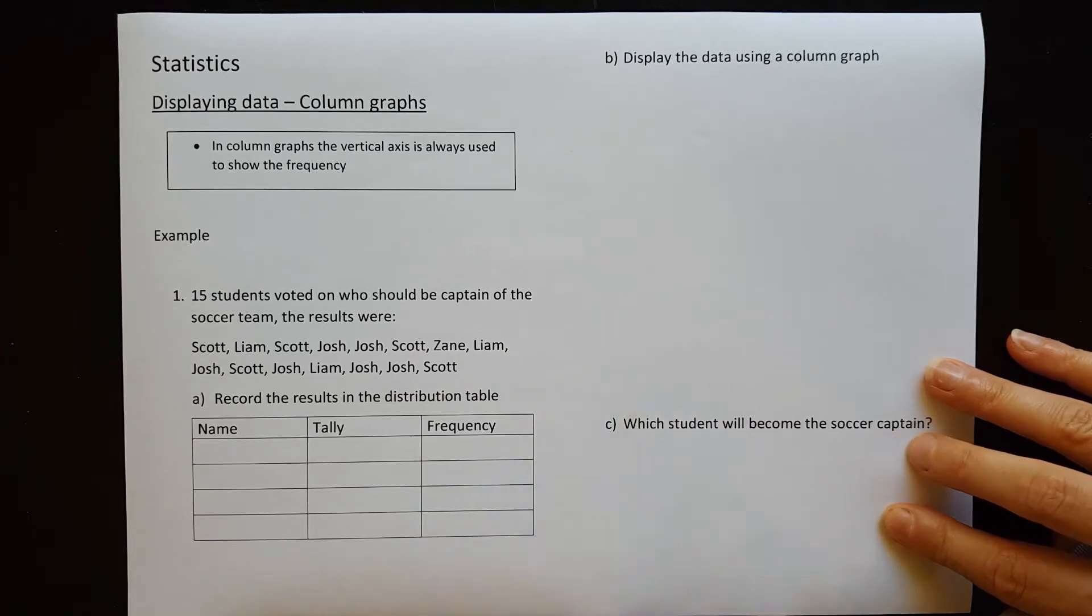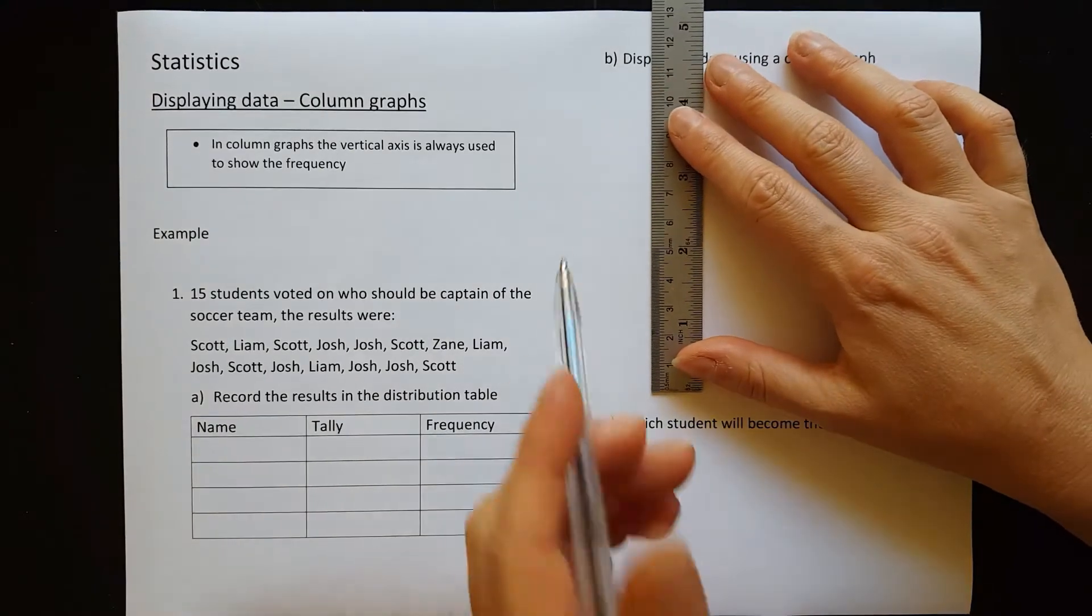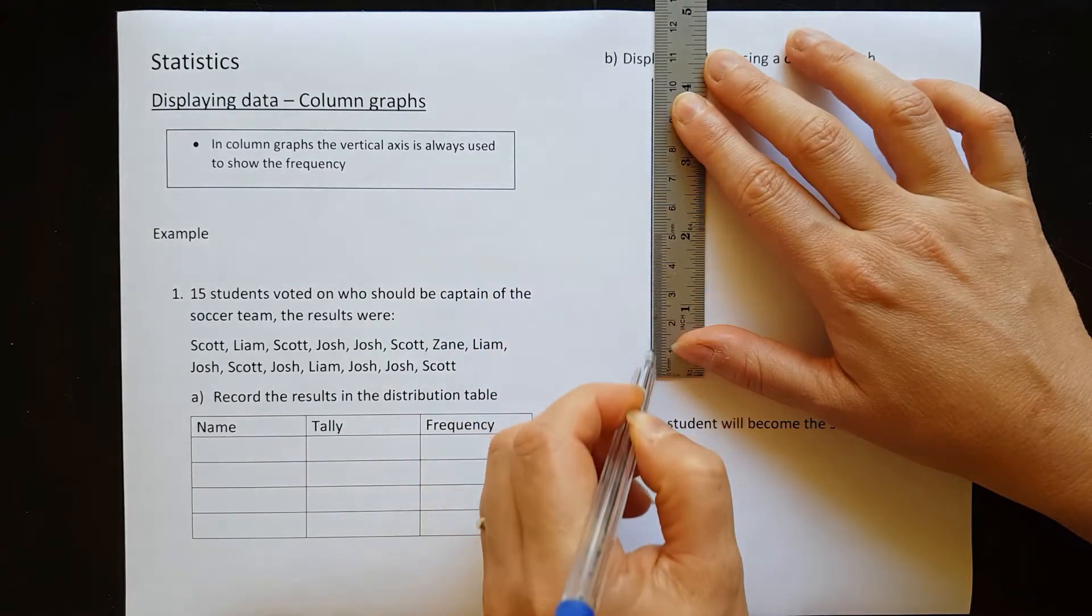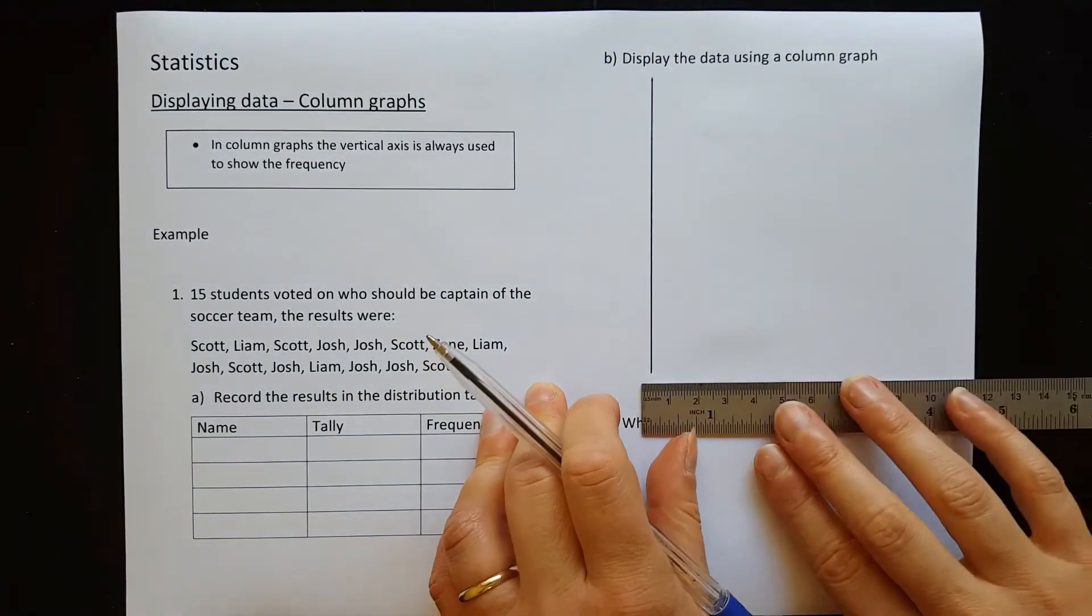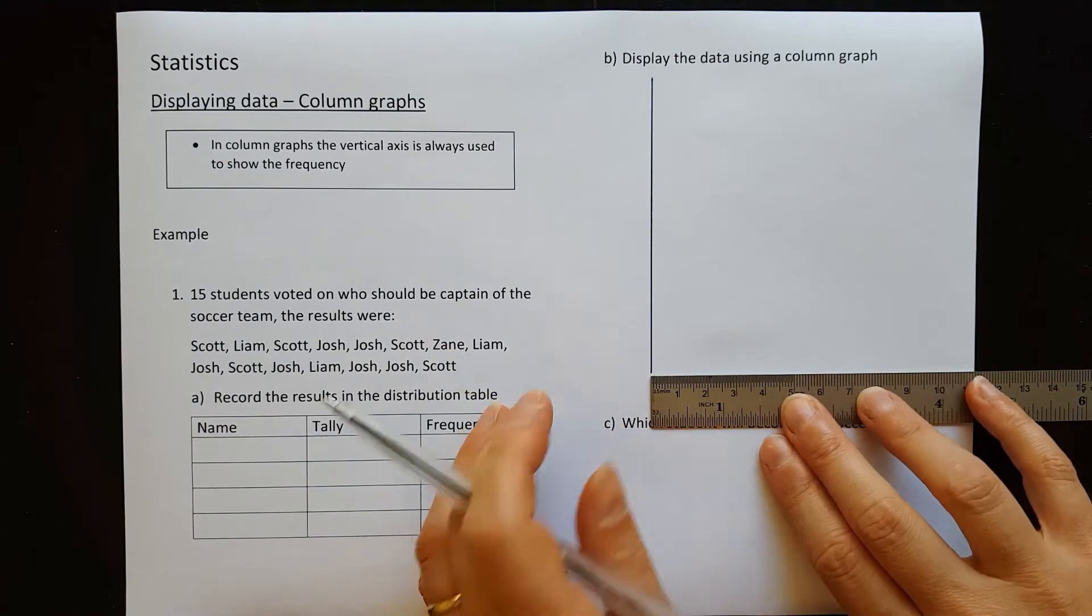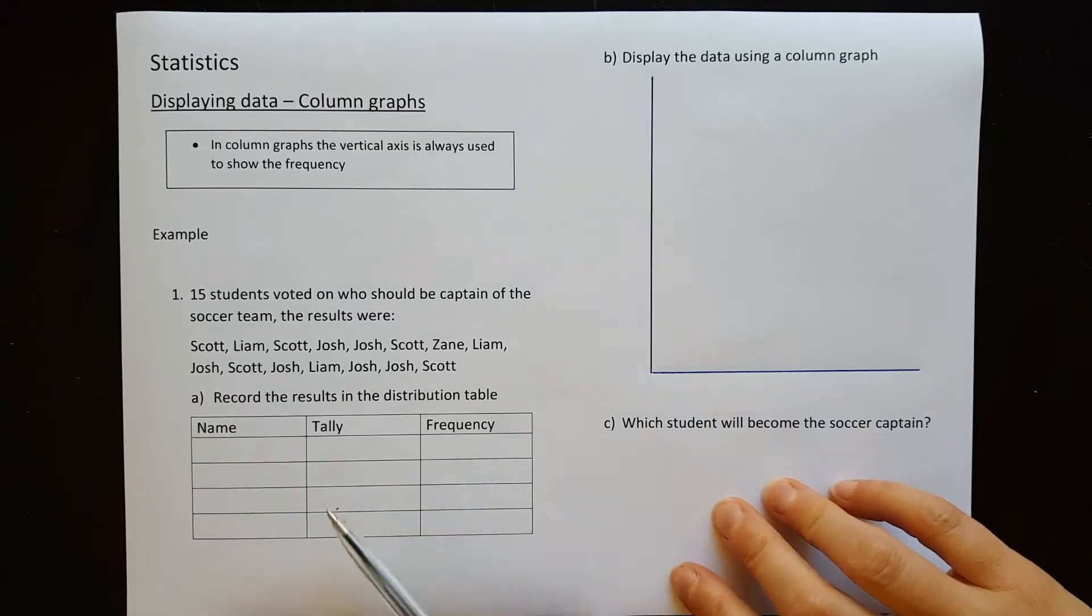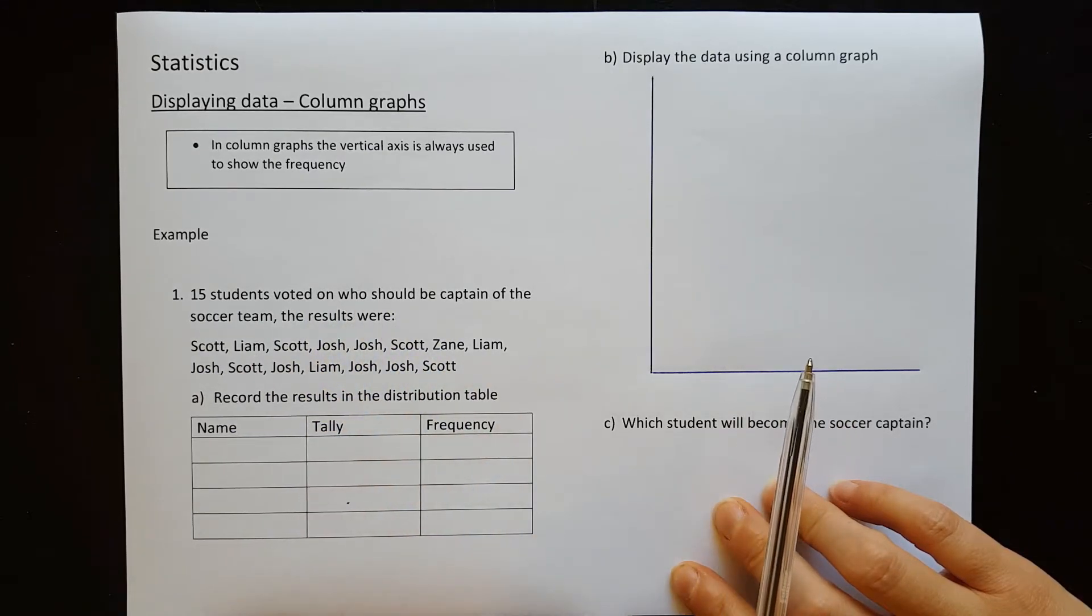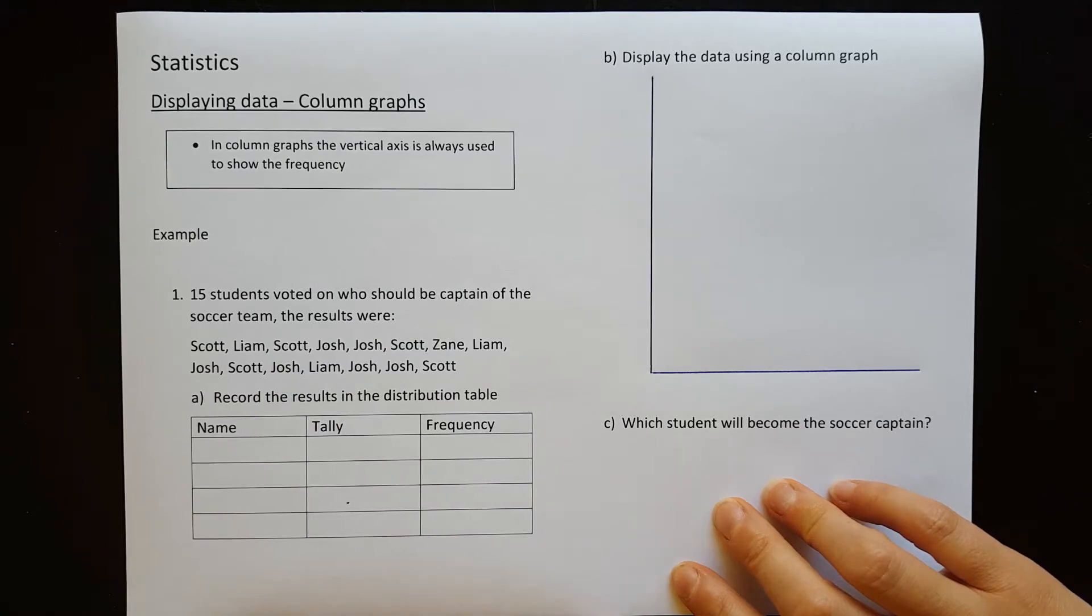So we're going to draw over here a graph and the vertical axis, which will go this direction, that one is always for the frequency. The horizontal axis will be for whatever the other variable is in your data. So let's have a look at our question here. There are 15 students who voted on who should be captain of the soccer team. The results were, and we have a list of names.